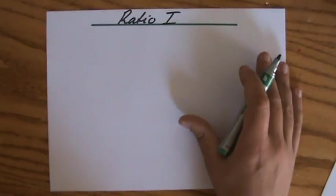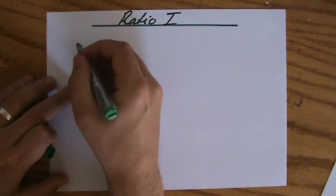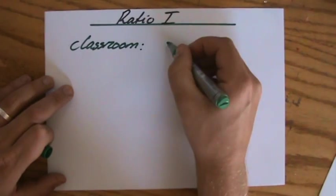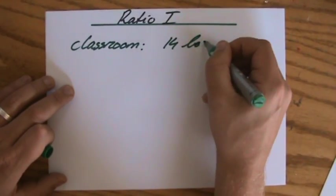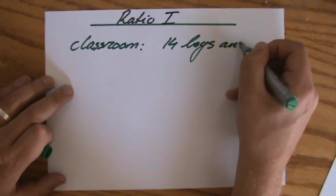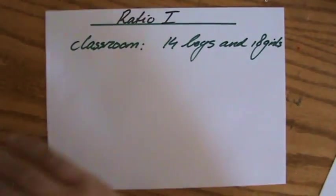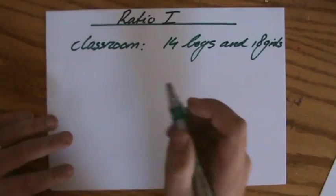Now let's have a look at an example. In my classroom I have, let's say, 14 boys and 18 girls. I could represent that in a particular ratio where I have 14 boys as a ratio to 18 girls.